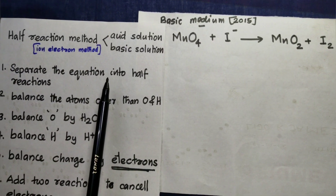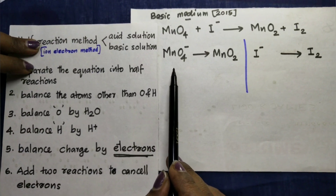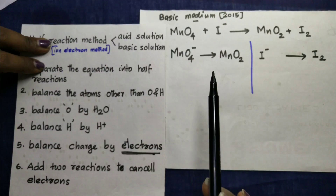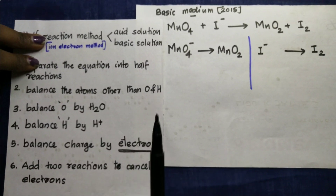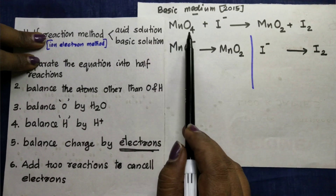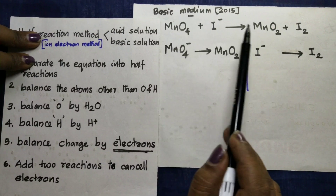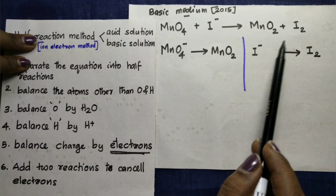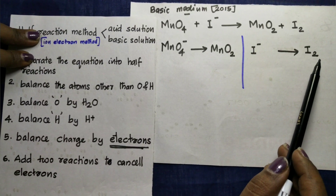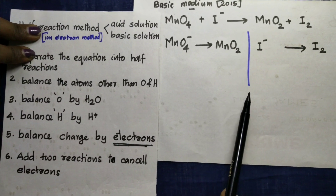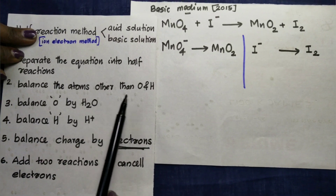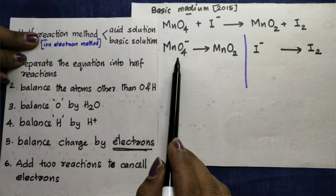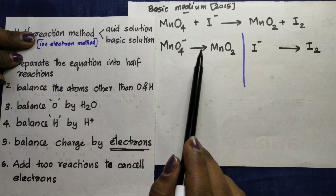The first point of the half-reaction method: you are going to identify the oxidation or reduction. That is easy. If you have Mn then MnO4⁻ to Mn²⁺. How to do the half reaction: 2I⁻ to I₂. How to do the half reaction — balance the atoms other than oxygen atom.